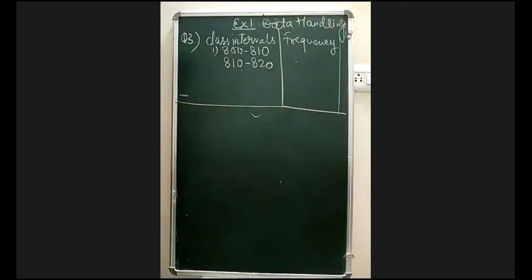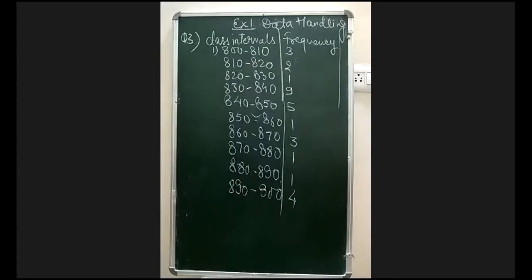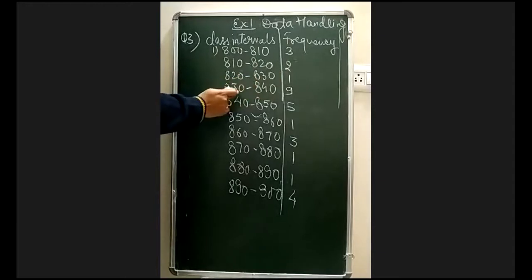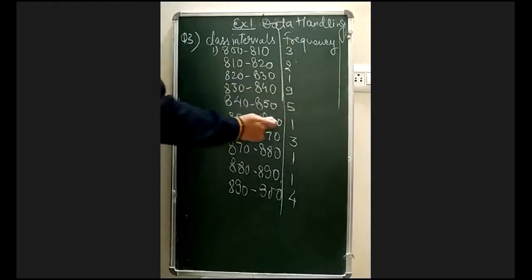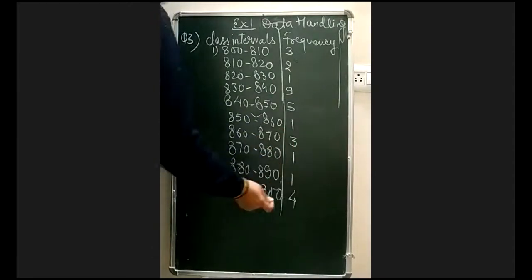Now let us count how many values fall in each interval. Please count along with me. For the interval 800 to 810, according to me there are 3. Please use a pencil for underlining. On the board you can observe: 800–810 has 3, then 810–820, 820–830, 830–840, 840–850, 850–860, 860–870, 870–880, 880–890, 890–900.